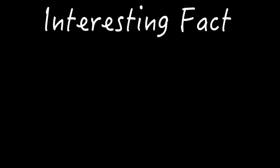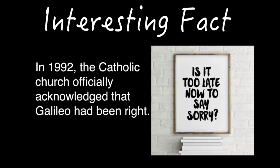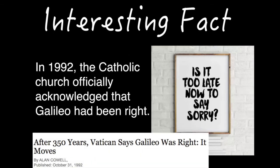An interesting fact: things changed in the 1900s as we learned more. The Catholic Church in 1992 officially acknowledged that Galileo had been right and apologized. An article at the time states: 'After 350 years, Vatican says Galileo was right — in fact, it moves.' 'It' being the earth — a bit of wordplay, because that's what Galileo famously said: despite what the church says, the earth still moves.